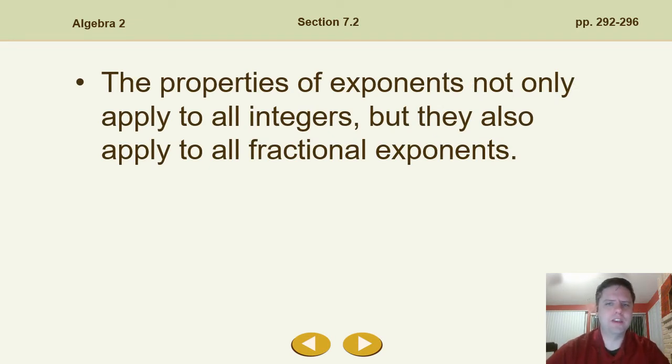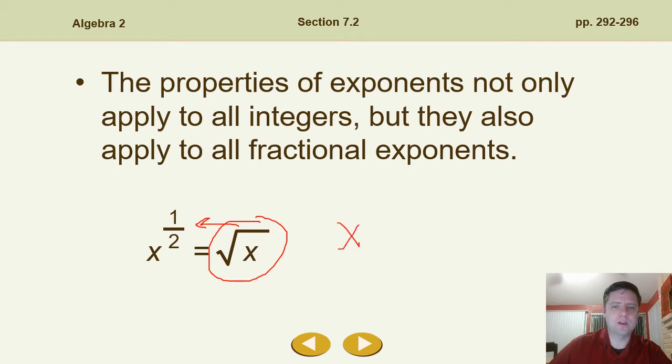Properties of exponents not only apply to all integers, but they also apply to all fractional exponents. So x to the 1/2 can also be rewritten as the square root of x. I think I showed you guys that last time when we were talking about all those radical expressions. I was kind of implicitly doing this in reverse. I was moving from this to this direction, where you can rewrite any of these roots as fractions. So square root being 1/2, if it was the cube root of x, we could rewrite that as x to the 1/3. So all you do is you just put whatever the index is on the radical, we just put that underneath the fraction. So you can rewrite these as fractions, and you can rewrite fractions with radical signs and roots like this.